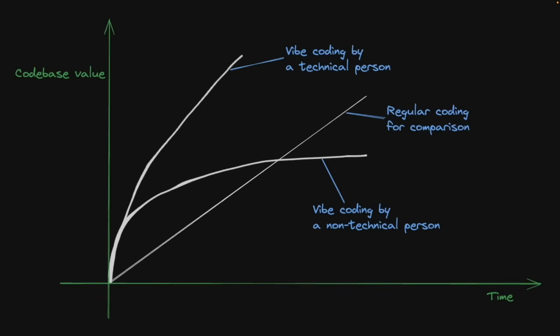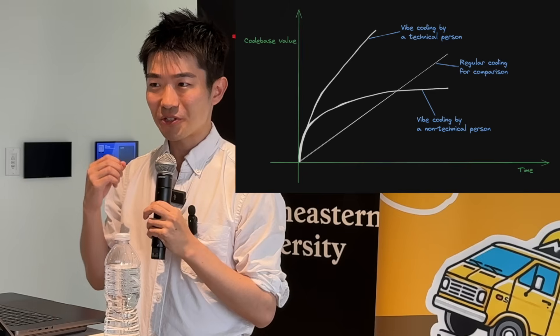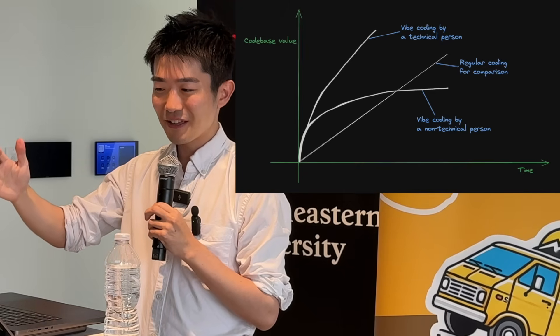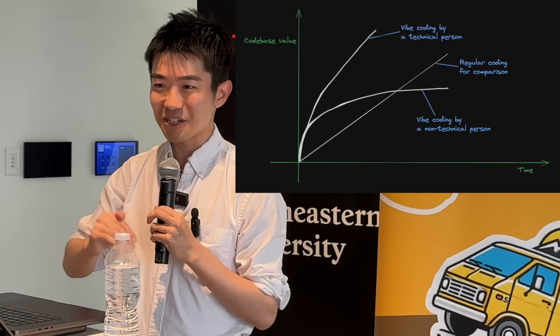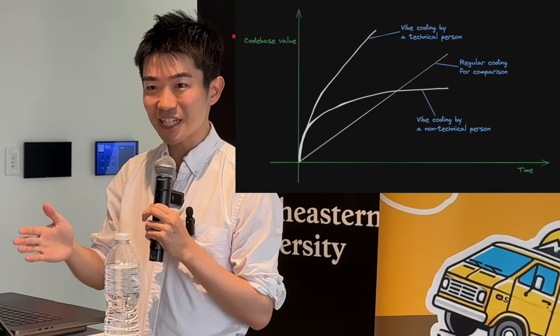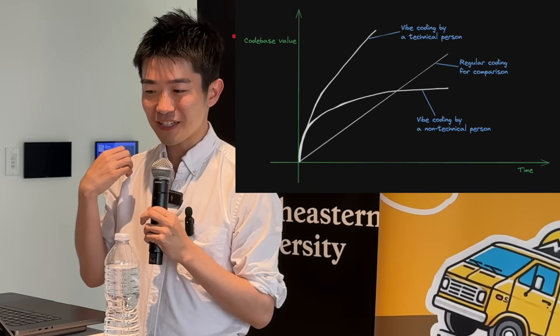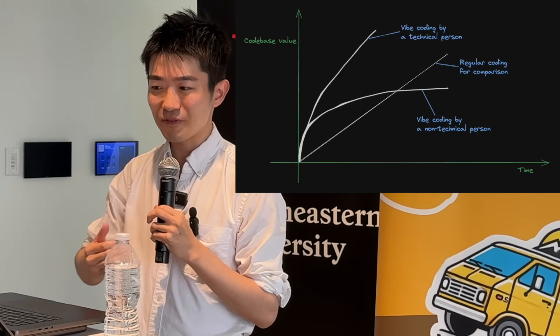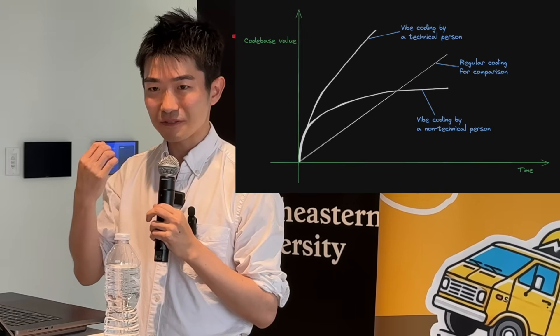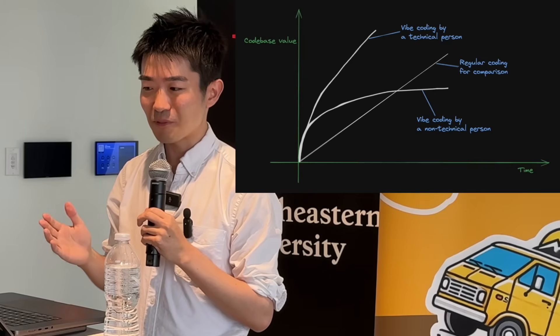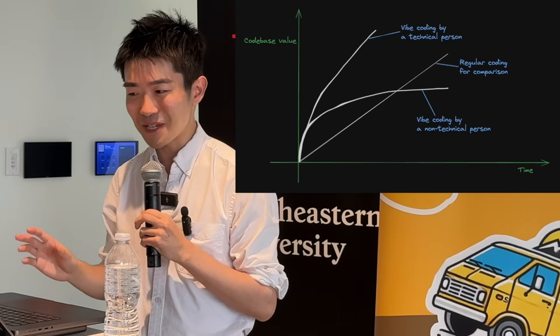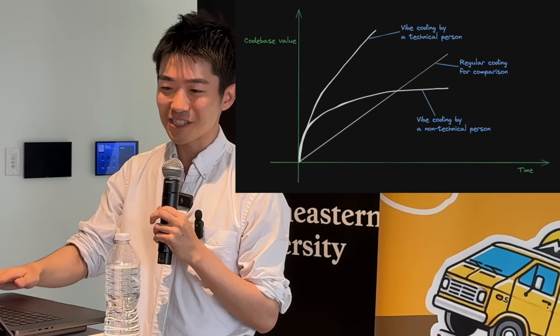I want to close with this chart I created about a month ago. I've gotten good validation that it's pretty accurate: Vibe Coding is already powerful for a non-technical person — if you're creating a one-off project, you can create a lot of value quickly, but then it becomes harder and harder to manage the codebase. When done right by a technical person, you can create a lot of value at the beginning and keep adding more without accumulating tech debt. By a technical person, I mean someone who's able to follow all of these commandments.